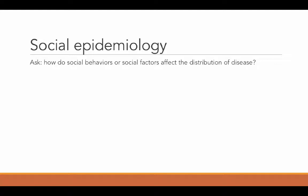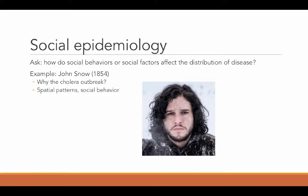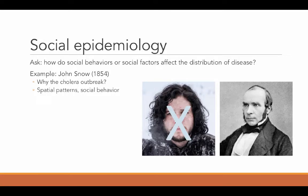One of the most famous people associated with social epidemiology is a guy named John Snow. What he was witnessing around him in London in 1854 was the outbreak of cholera, and he wanted to understand why this was happening because it was a really serious disease. A lot of people were dying, and if you could figure out why this was happening and stop it, you could prevent lots of death.